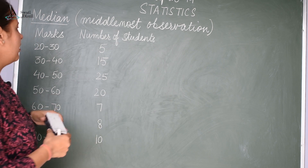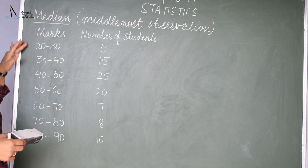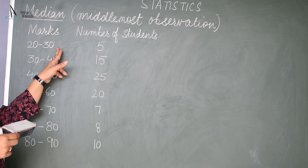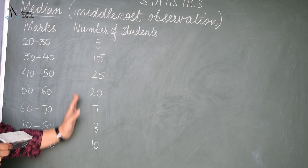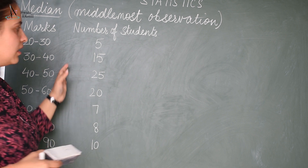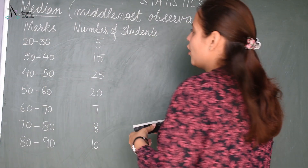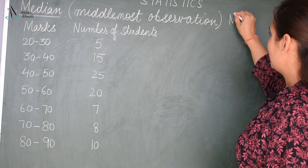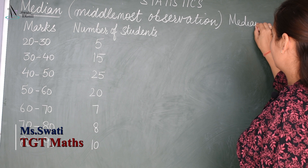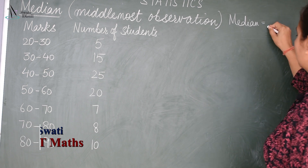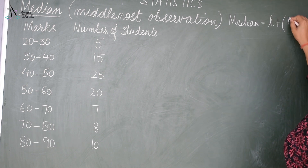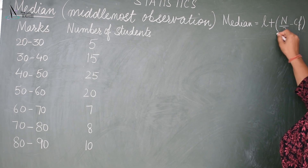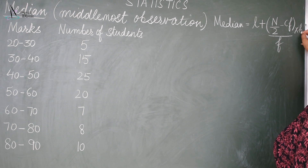Here we are given the class interval as marks and the corresponding frequency — for example, 20 to 30, the number of students is 5, and similarly we have other frequencies. Now to find out the median, we have the formula: Median = L + ((N/2 − CF) / F) × H.